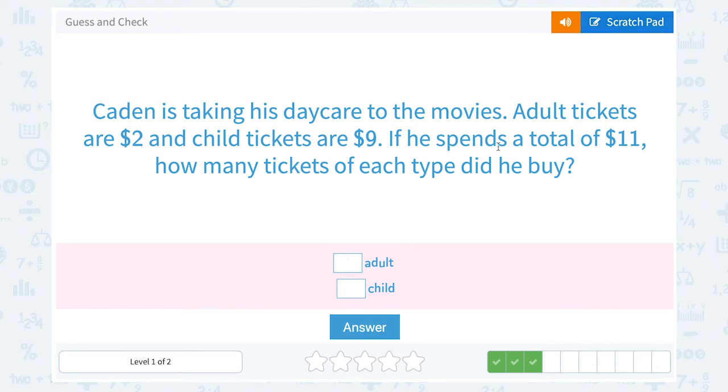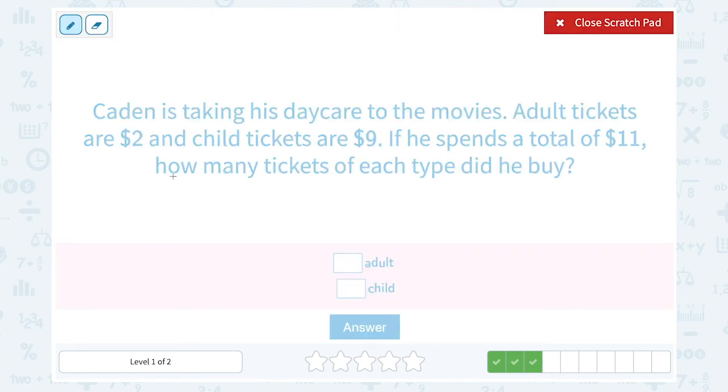I think I can guess pretty quickly because it can't be all adult tickets because two doesn't go evenly into 11. And it can't be more than one child ticket because nine is already most of 11. So let's say it's one child ticket. One times nine would be $9 already in children's tickets. How much more would we need to get to 11? We would only need one $2 ticket. So we could say one adult ticket. One times $2, that would give us another $2. And then when we add that together, our nine plus two would give us 11.